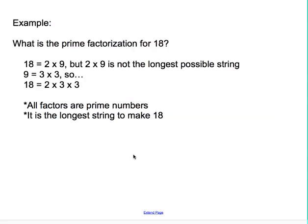Let's take a look at another example. What is the prime factorization for 18? Well, we know that 18 equals 2 times 9, but 2 times 9 is not the longest possible string because we know that 9 is a composite number. 9 equals 3 times 3, so we could put that 3 times 3 in place of our 9, and we know that 18 equals 2 times 3 times 3.